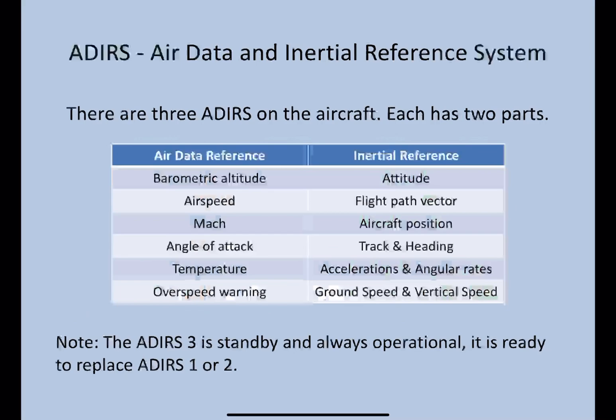Whereas the inertial reference gives us attitude, flight path vector, aircraft position, track and heading, acceleration and angular rates, ground speed and vertical speed.